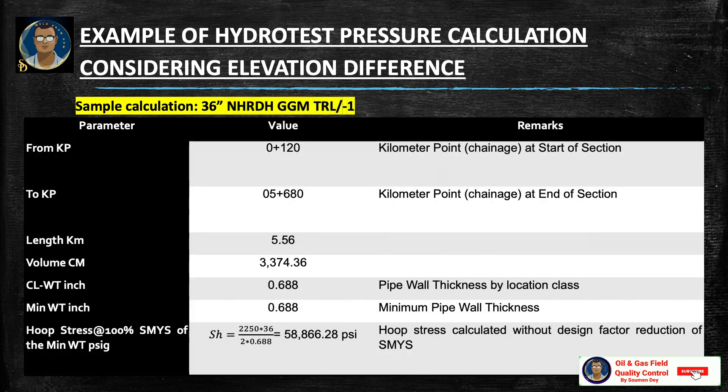Kilometer point: from KP 0.0 + 120 at start of section to KP 5 + 680 at termination point. The test section length is 5.56 km. Using the formula V = (pi × D²) / 4 × L, the volume of water is 3,374.36 m³. The wall thickness is 0.688 inch.